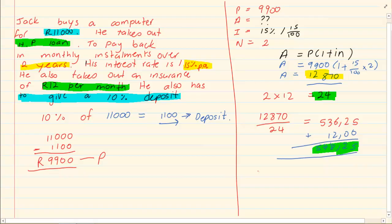So we can say 548 Rand 25 cents times 24 is equal to 13,158. But that is not all that he paid.